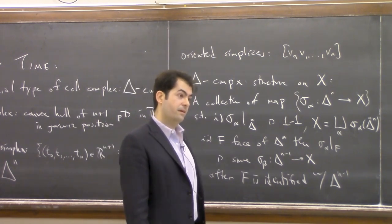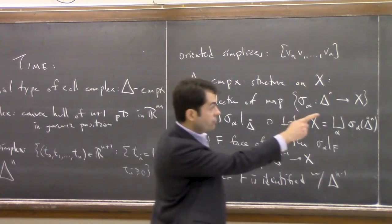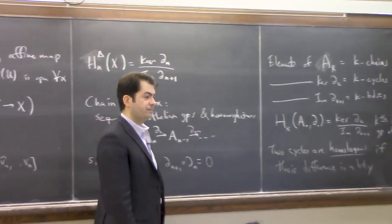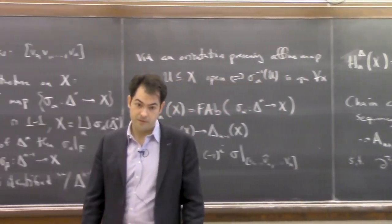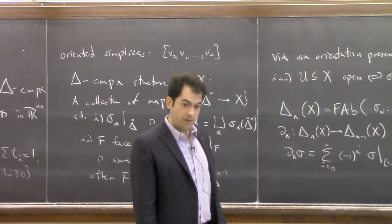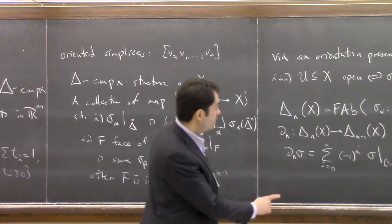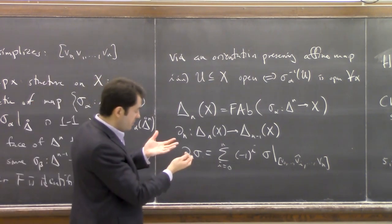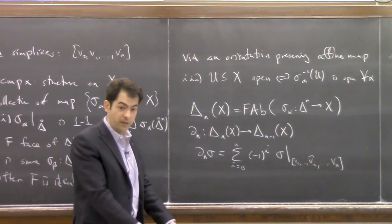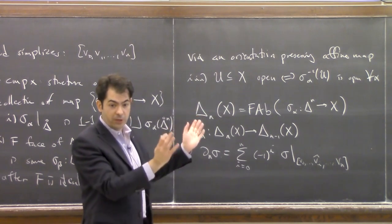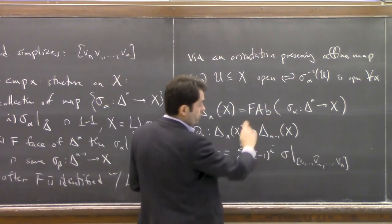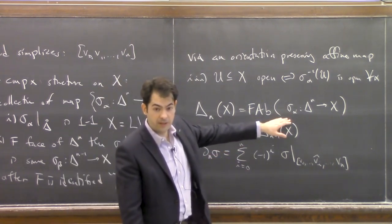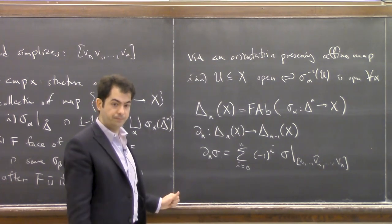Cycles are elements of the kernel of the boundary map. Regarding orientation: we need oriented simplices because you need to know what signs to put, and the signs come from the orientation. The Delta complex structure is built with oriented simplices, so we don't need the space to be orientable — last time we talked about RP2 and the Klein bottle, which are not orientable. An element of a chain group looks like a linear combination with integer coefficients of your generating set; the boundary map is defined on generators and extended linearly over the integers.